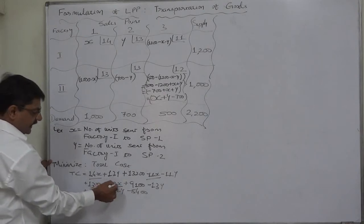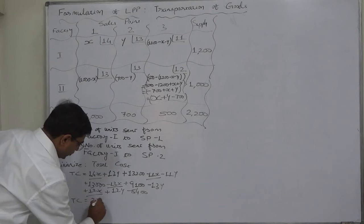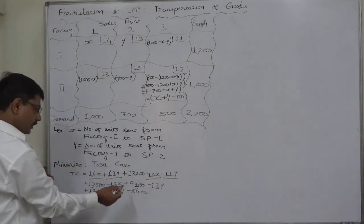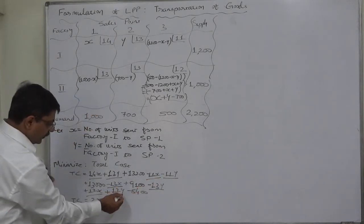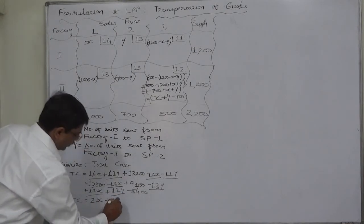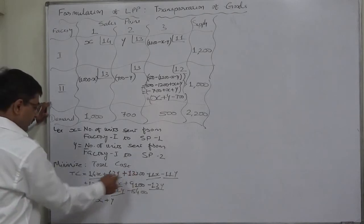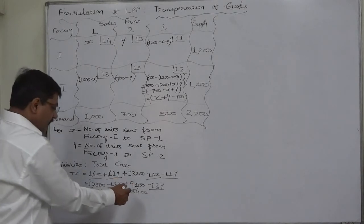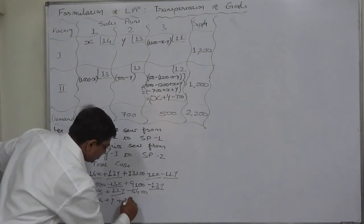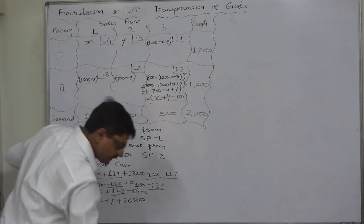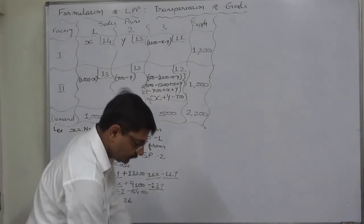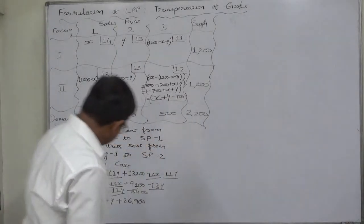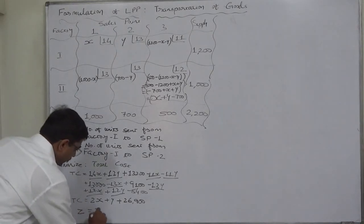Collecting all x terms: 14x − 11x − 13x + 12x = 2x. Collecting all y terms: 13y − 11y − 13y + 12y = 1y. Collecting constants: 13200 + 13000 + 9100 − 8400 = 26900. So the total cost z = 2x + y + 26900.